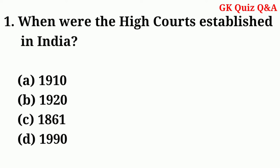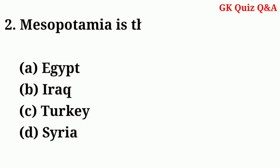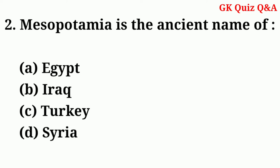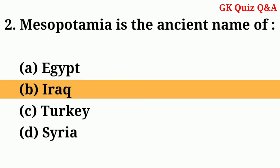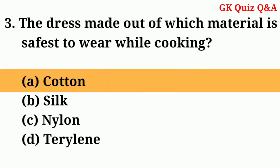Answer: C — 1861. Mesopotamia is the ancient name of — Answer: B — Iraq. The dress made out of which material is the safest to wear while cooking? Answer: A — Cotton.